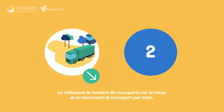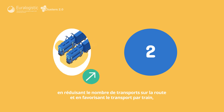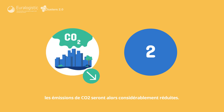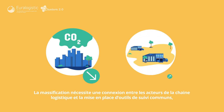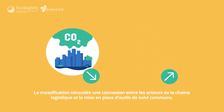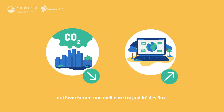En réduisant le nombre de transports sur la route et en favorisant le transport par train, les émissions de CO2 seront alors considérablement réduites. La massification nécessite une connexion entre les acteurs de la chaîne logistique et la mise en place d'outils de suivi communs qui favoriseront une meilleure traçabilité des flux.